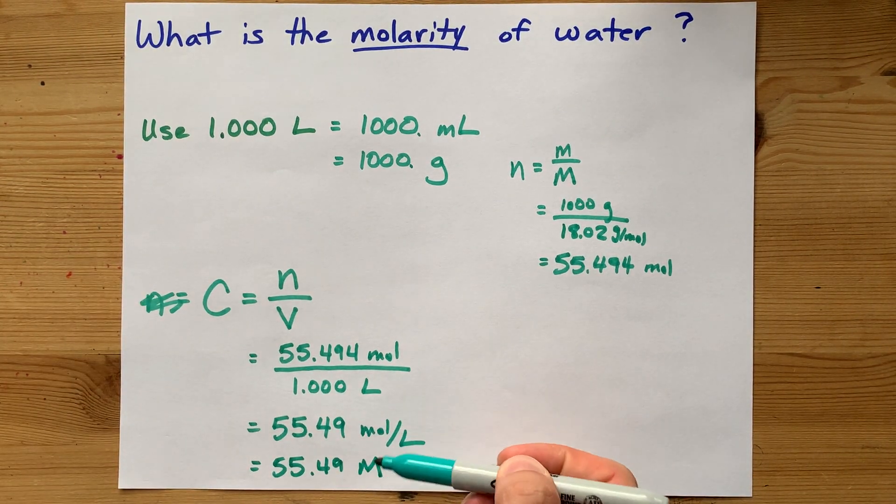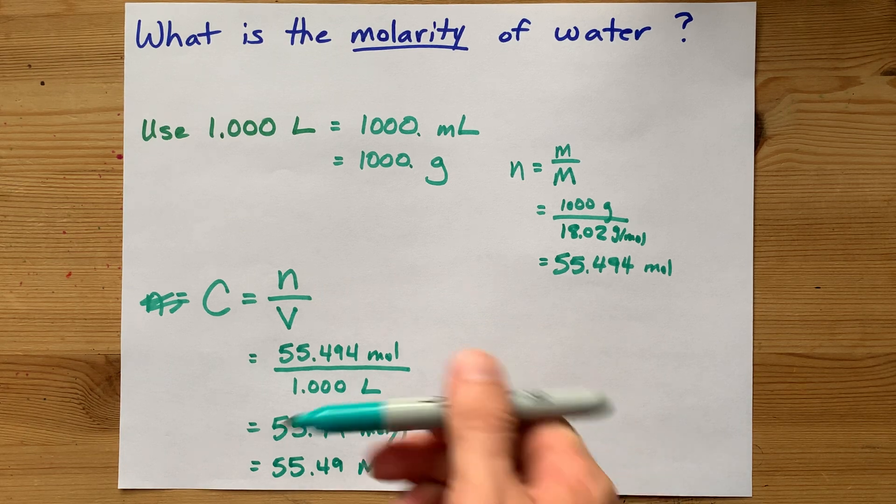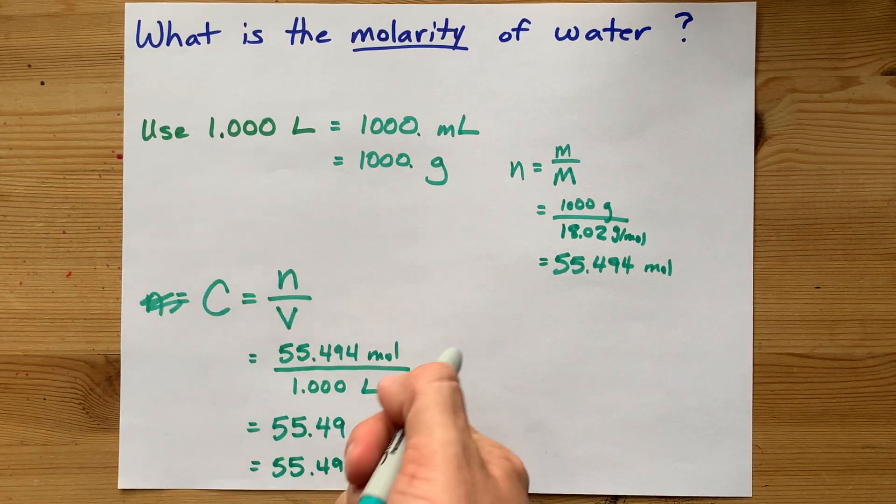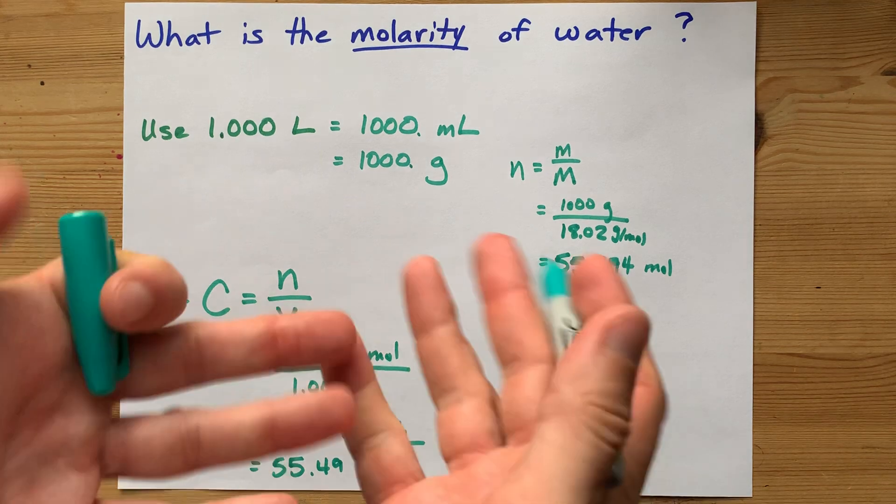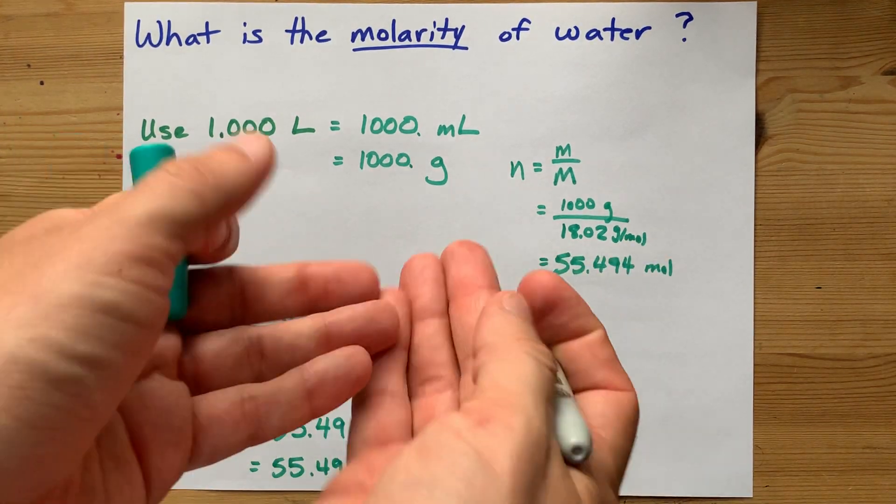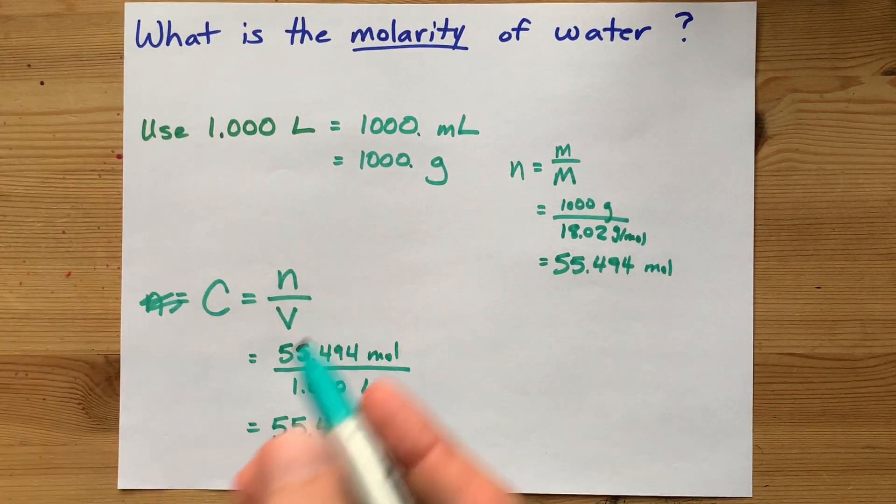Now, that seems like a really high concentration, but what's the concentration of water in itself really high? Because it's just pure water. You're not diluting it with anything.